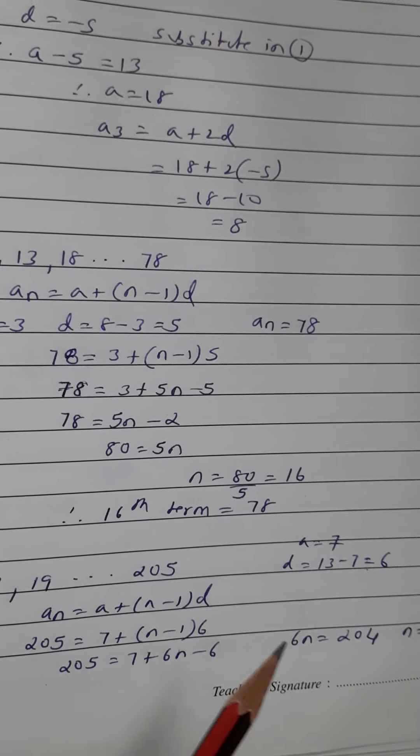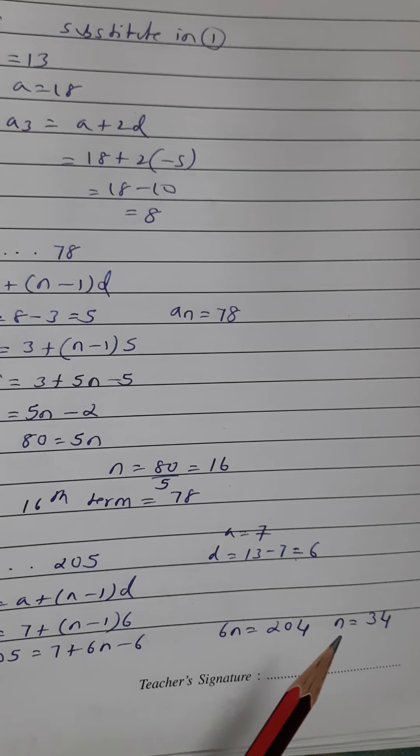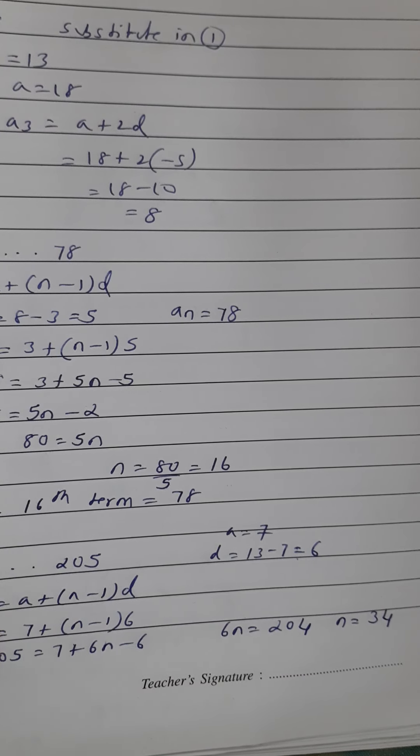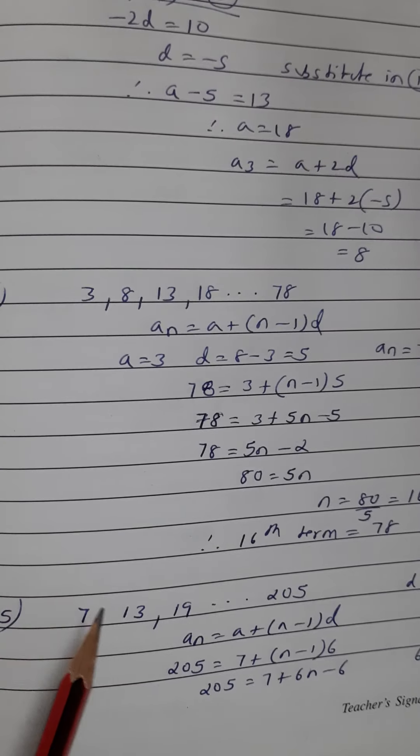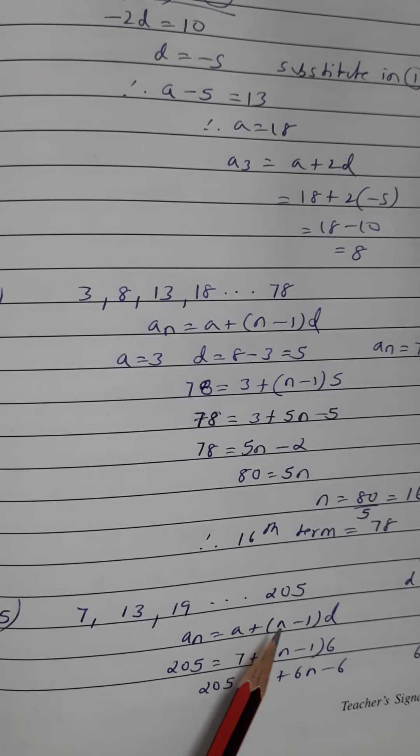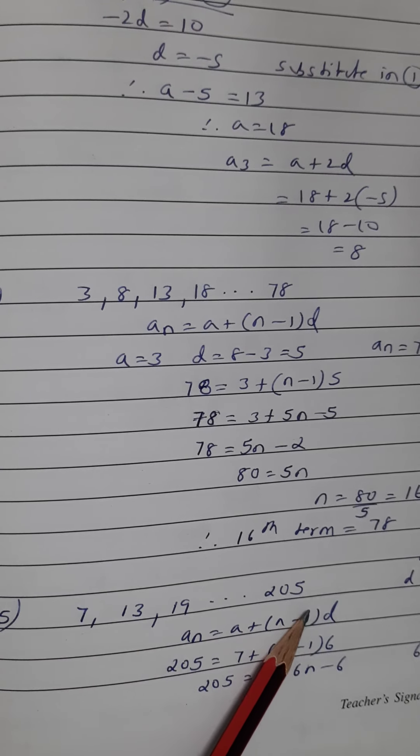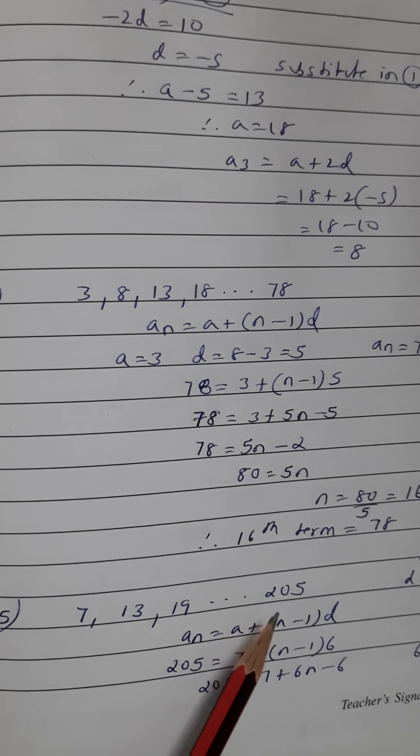Then n's value, we will find it. 204 divided by 6, the answer will be 34. So how many terms are there in this arithmetic progression? In this arithmetic progression there are 34 terms. And 205 is the 34th term of this arithmetic progression. That means this is a_34.